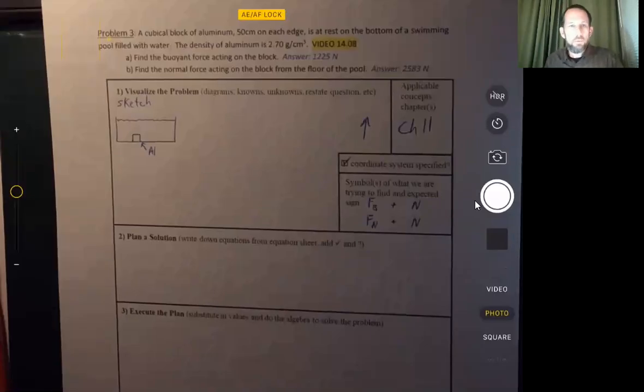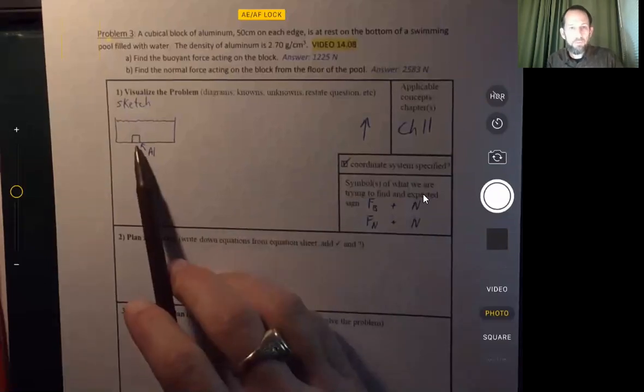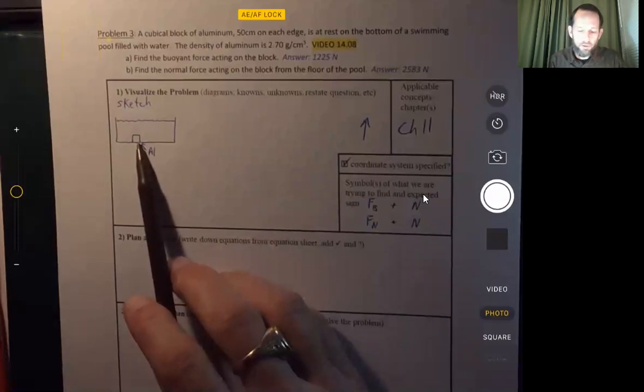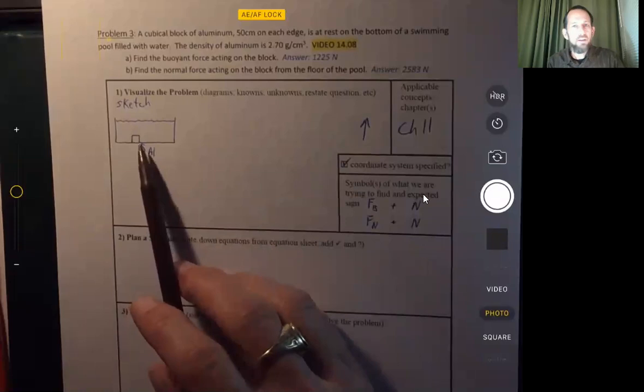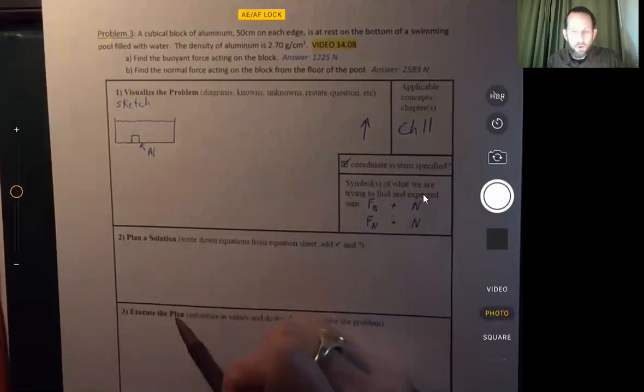Greetings, everyone. We're going to be solving this problem that involves a block of aluminum sitting on the bottom of a swimming pool. And just to be sure, it does tell us that the swimming pool is filled with water. All right, so how are we going to go about this?